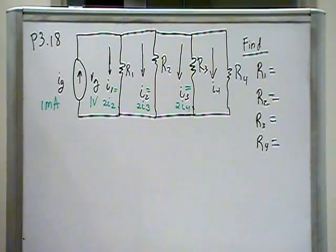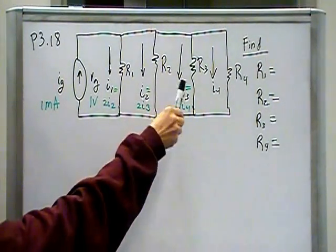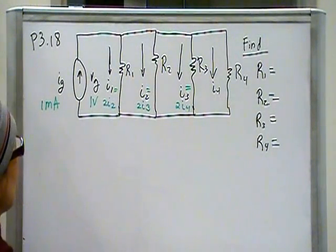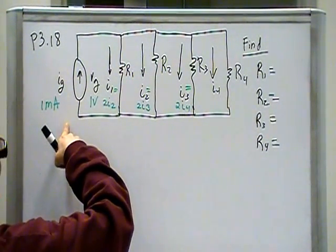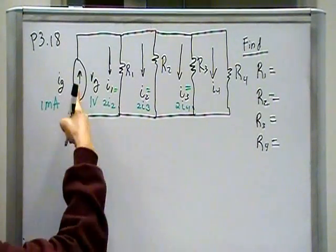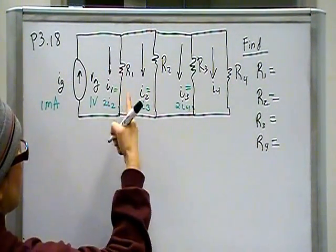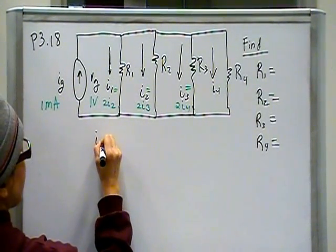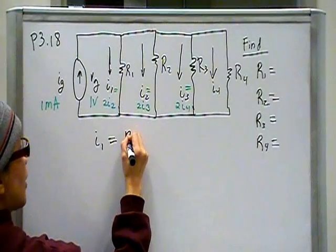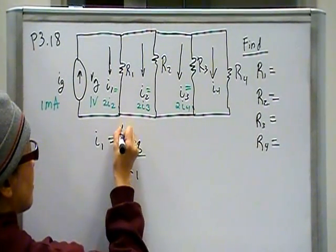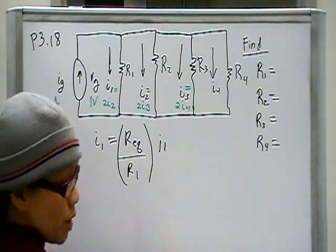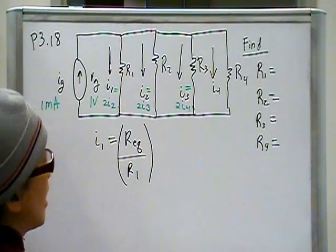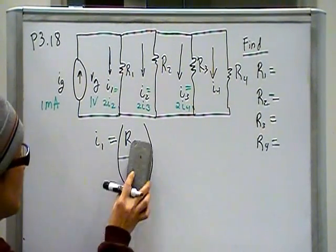So let's take a look at what we have. We have four things that we don't know, but we have a bunch of dependencies. So let's just start with what current division tells us. I know that I've got 1 milliamp here. So that is going to split through here like this. Current division tells me that I sub 1 is going to equal Req over R1 times 1 milliamp. Well, actually, you know what, I'm going to take a step backwards.